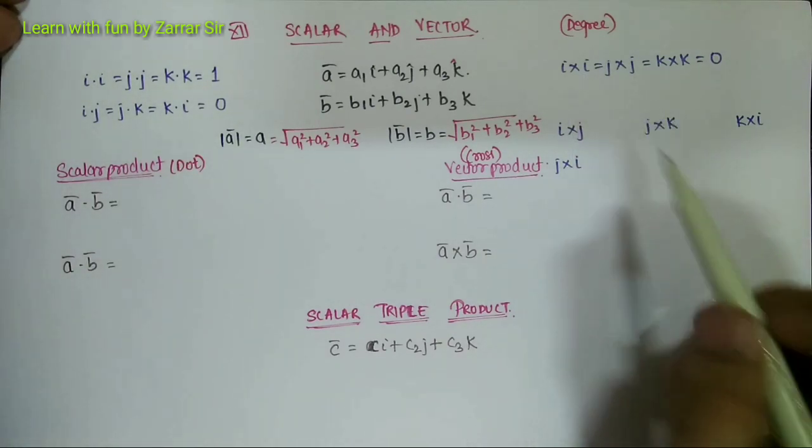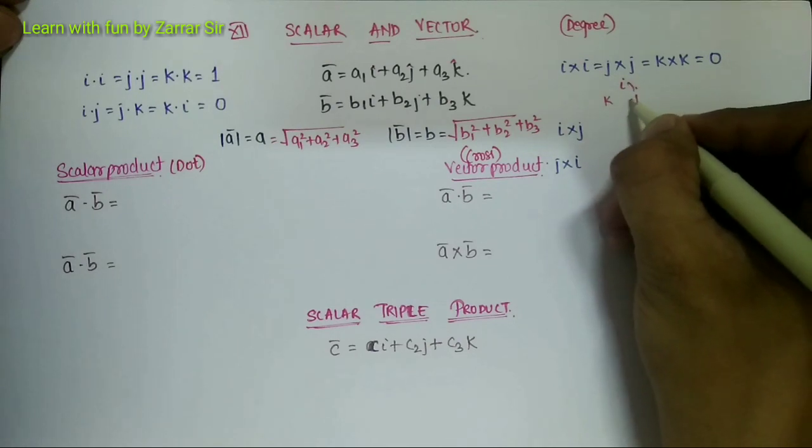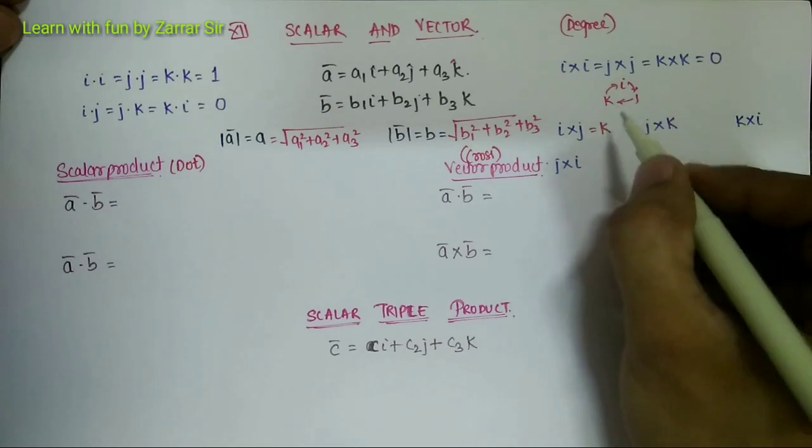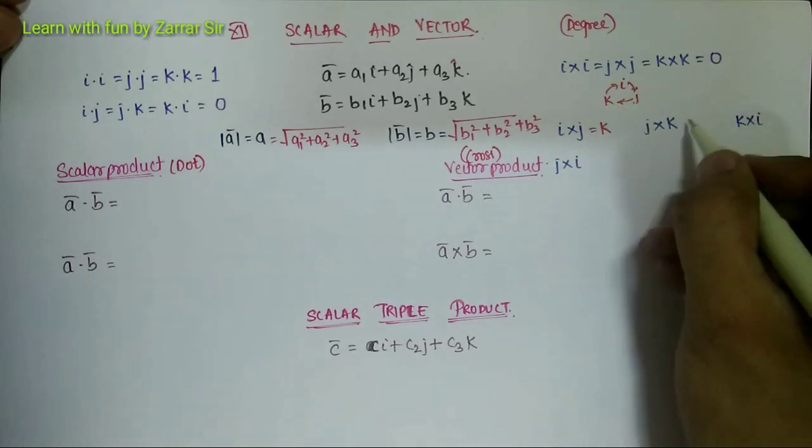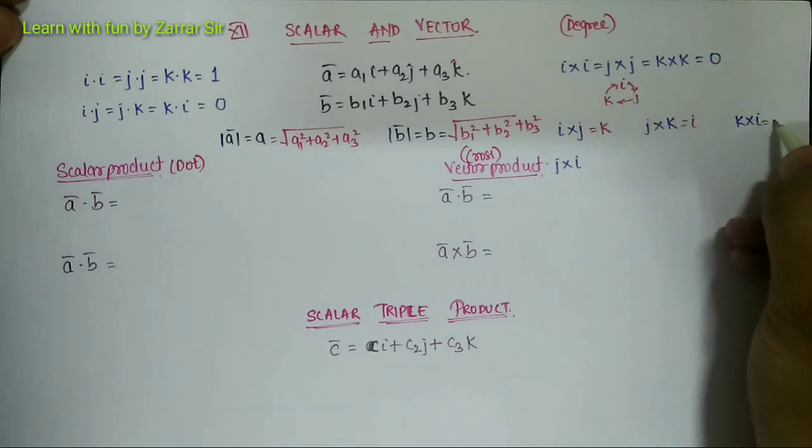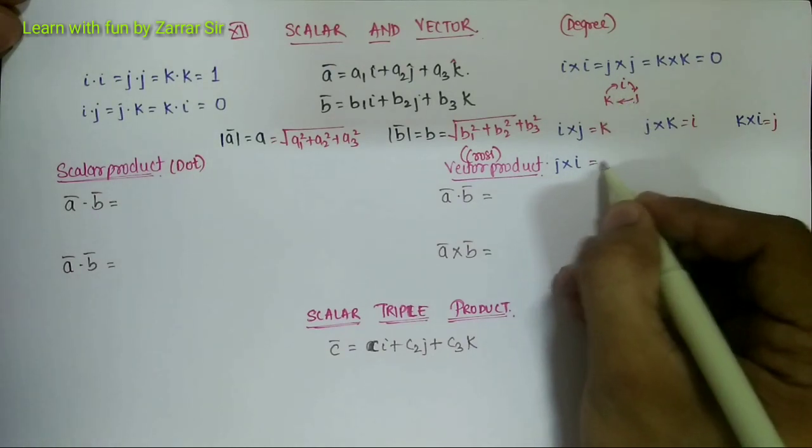But for cross product you should remember: if the cross product is of the same vector it is zero. And if it is of different vectors, do remember the cyclic shortcut i, j, k. I bar cross j bar is k bar, j bar cross k bar is i bar, k bar cross i bar is j bar. And if I interchange it, like j bar cross i bar, it would be minus k bar - reverse direction is negative.